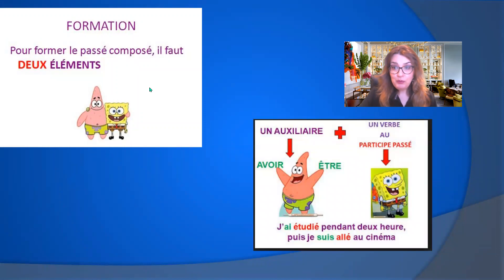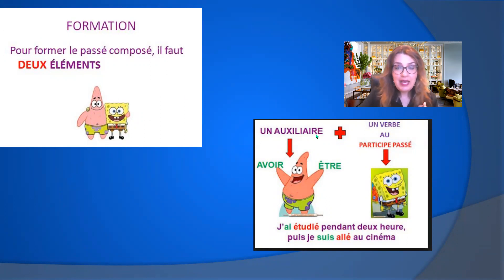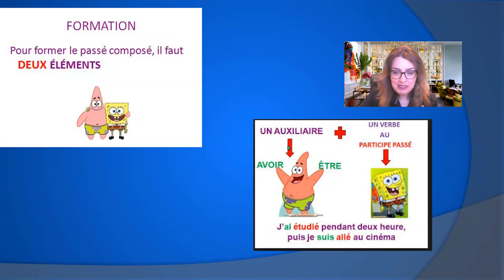Now, how do we form the passé composé? Pour former le passé composé, il faut deux éléments — to create the passé composé, we need two elements: an auxiliaire, a helping verb. We already learned avoir is one, and we will learn later that être is another helping verb, plus the participe passé, or past participle.